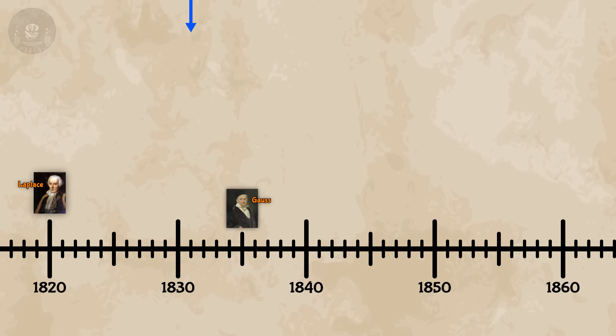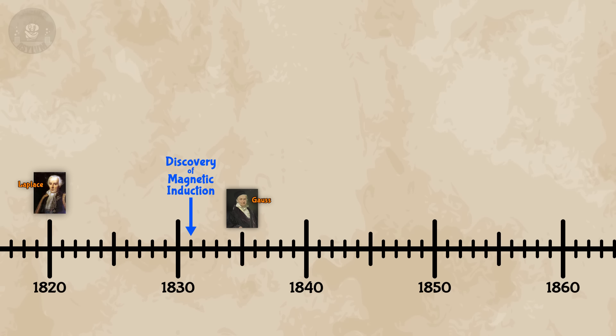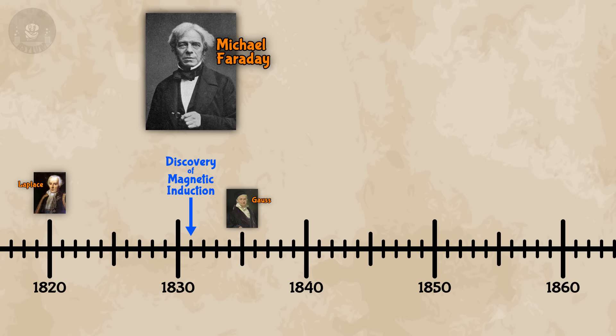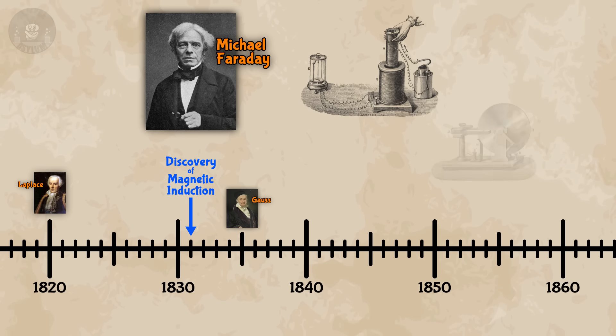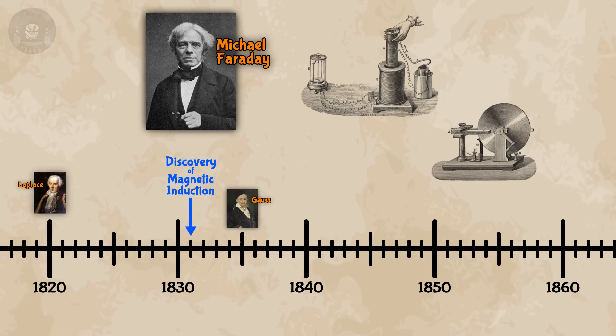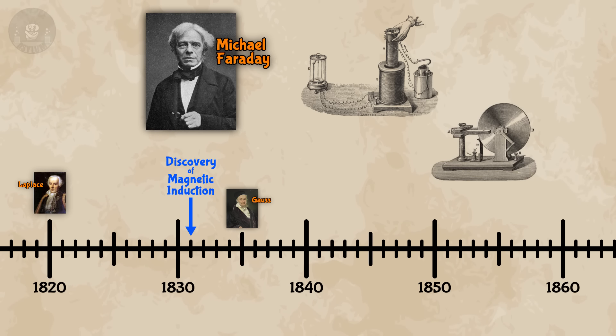To the timeline! All the way back in 1831, Michael Faraday was doing a series of experiments, some involving coils and others discs. But I'm getting a bit ahead of myself.